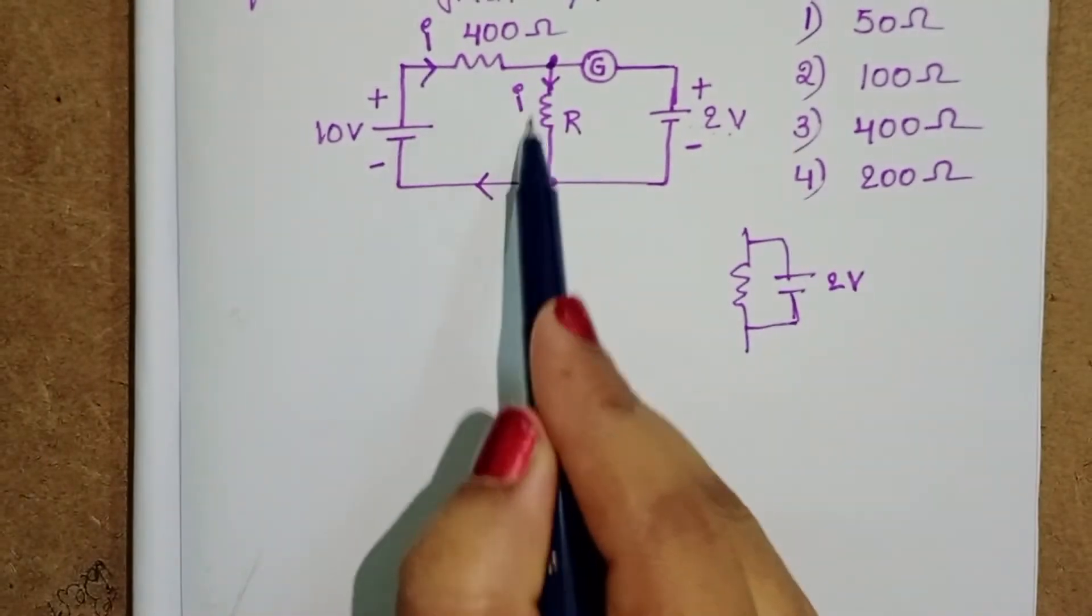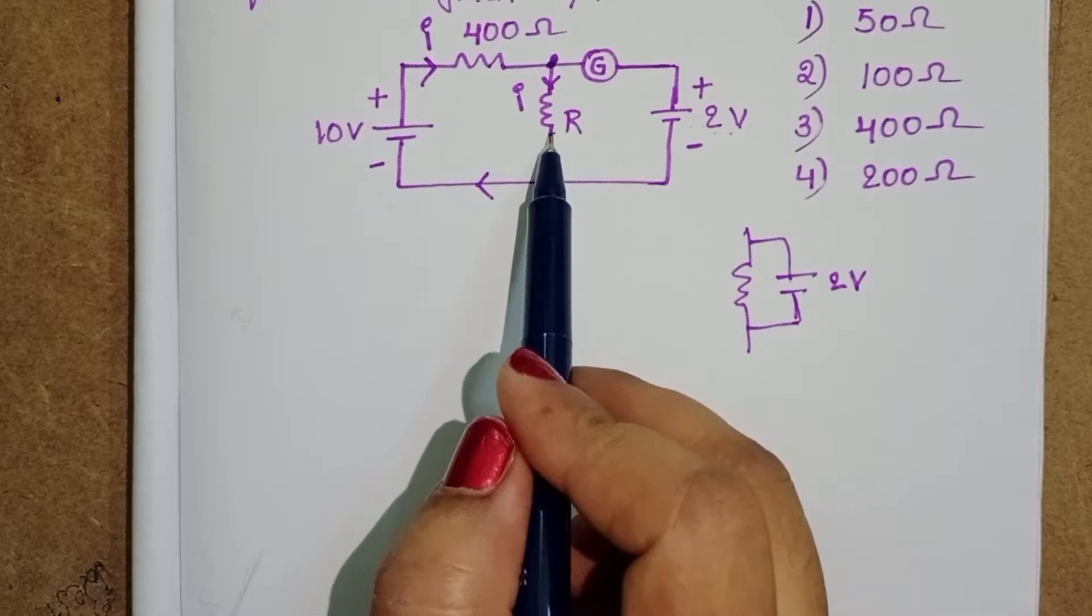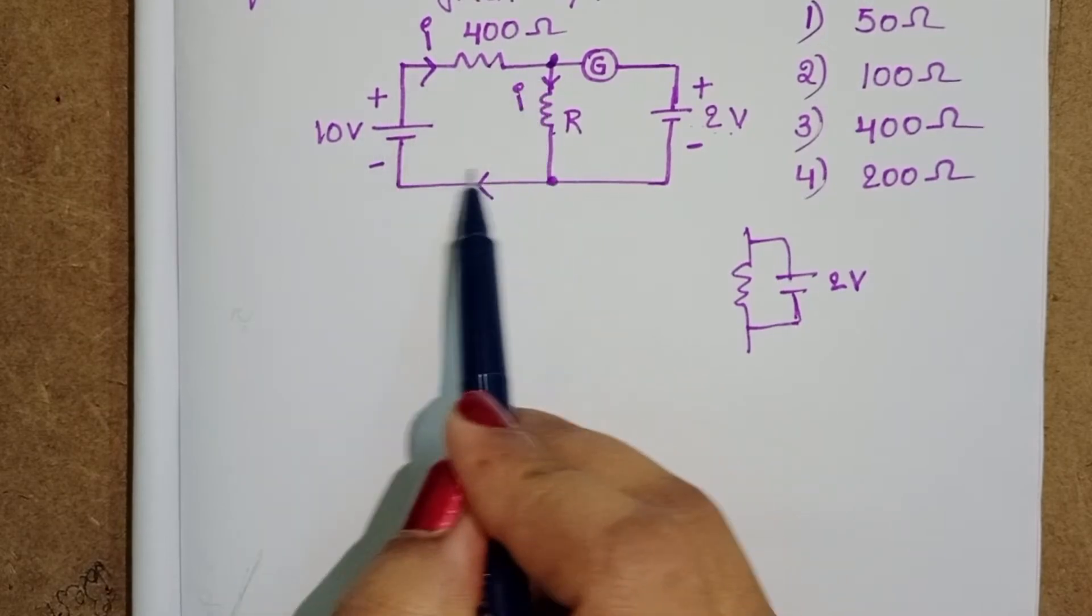Observe this part of the circuit. 10 volt battery, 400 ohm resistor and this resistor R. All these are in series connection.